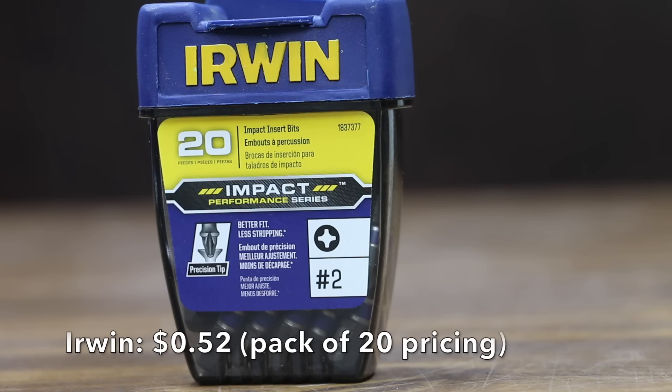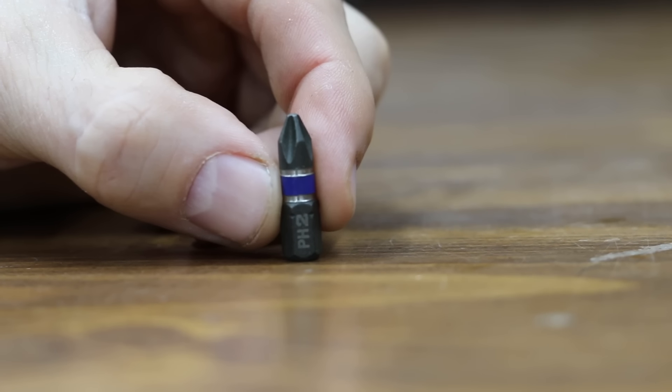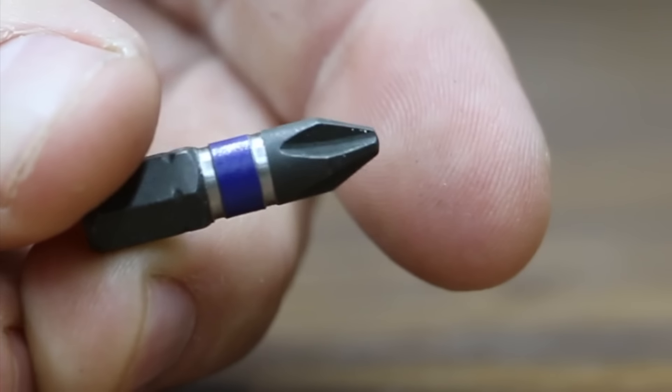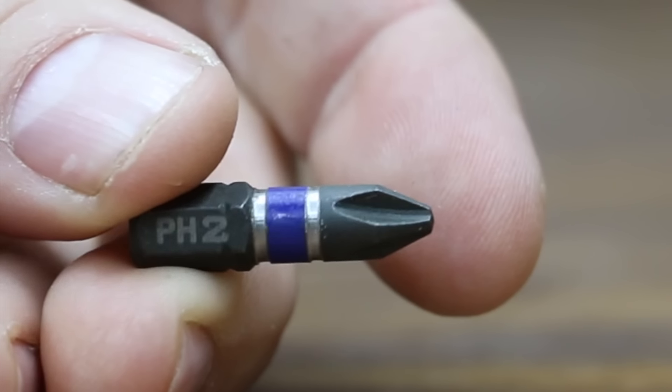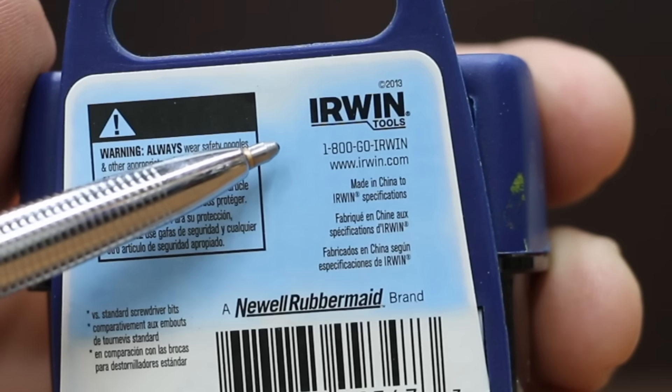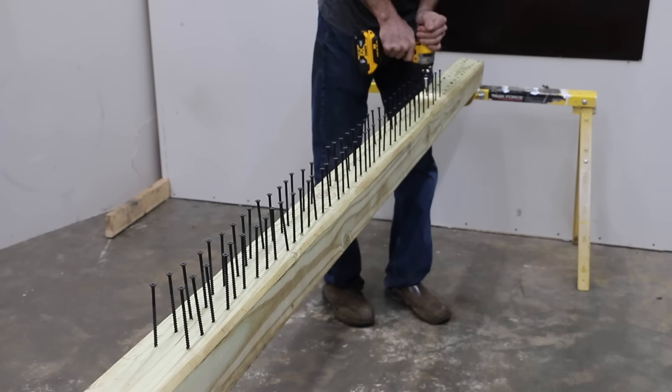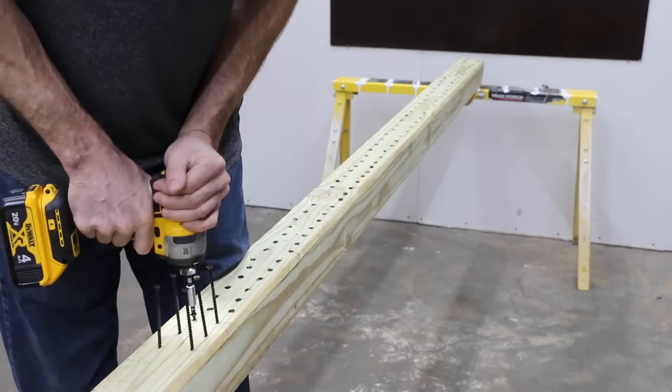Costing 52 cents each is this Irwin brand, which claims its forged bit delivers a superior fitment, which reduces stripping and increases life by three times. It's manufactured with heavy-duty, cold-forged, high-grade steel to withstand high torque output. Made in China. Irwin has a pretty good fit, but there's definitely some wobble. I could definitely tell the Irwin had more wobble than some of the other brands.